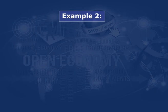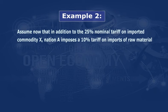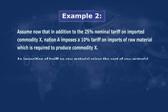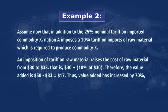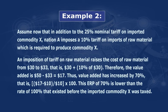Let us take another example. Assume that in addition to the 25 percent nominal tariff on imported commodity X, nation A imposes a 10 percent tariff on imports of raw material required to produce commodity X. An imposition of tariff on raw material raises its cost from $30 to $33 (that is $30 plus 10% of $30). Therefore, the value added is $50 minus $33 = $17. Thus, value added has increased by 70 percent — that is ($17 − $10) / $10 × 100. Thus, the ERP of 70 percent is lower than the rate of 100 percent that existed before the imported raw material was taxed.